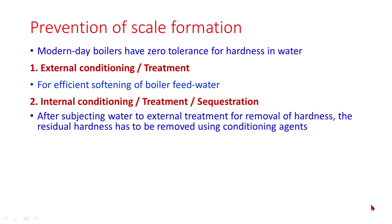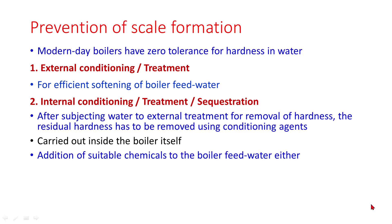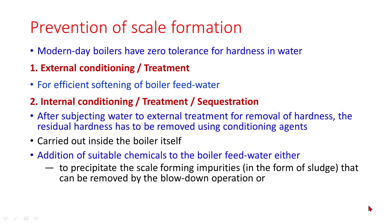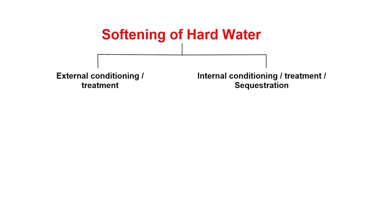External conditioning involves efficient softening of boiler feed water before the water is fed to the boiler. Internal conditioning: after subjecting water to external conditioning for removal of hardness, the residual hardness has to be removed using conditioning agents. It is carried out inside the boiler itself, by the addition of suitable chemicals to the boiler feed water either to precipitate the scale-forming impurities in the form of sludge that can be removed by blowdown operation, or to convert them into dissolved form that remains inside the water.